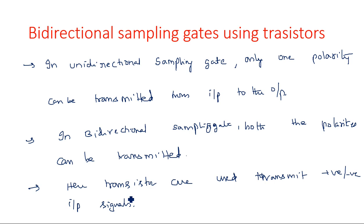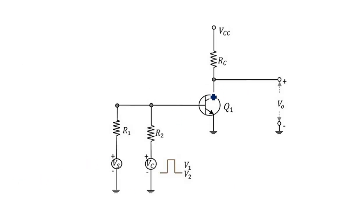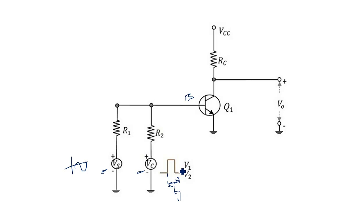Let us use the diagram of this bidirectional sampling gate so we can understand. We are using a transistor configured as an inverter — the emitter is at ground, output is taken from the collector, and the base is applied with the input. At the base there are two inputs: one is the original signal and the other is the control signal, which has a gate width of tg. During this tg duration, the input will be transferred to the output.